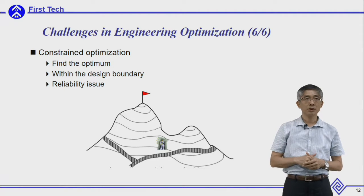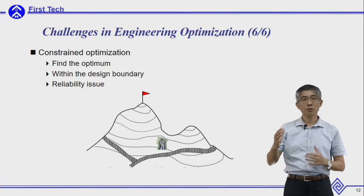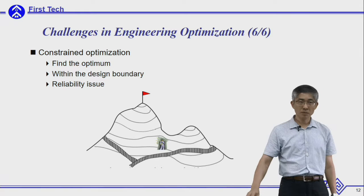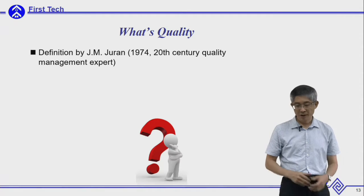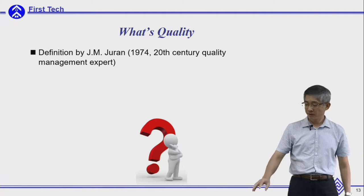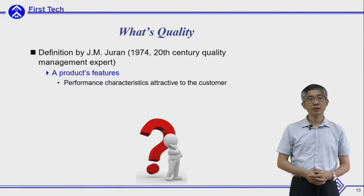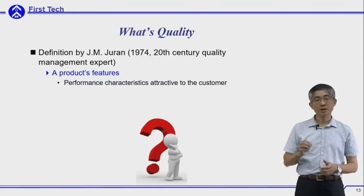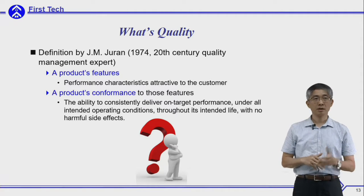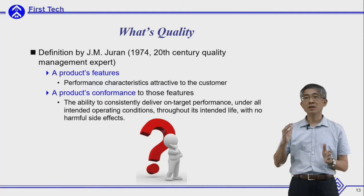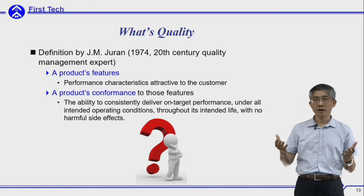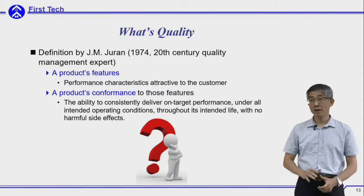When within the design boundary, you need to consider reliability, because every variable will have tolerances. You need to make sure that when tolerances occur, your design is still feasible. What is quality? An expert in 20th century quality management, Mr. Durand, gave a clear definition. The first part of quality is a product's features — characteristics attractive to the customer. The second is conformance: the ability to consistently deliver on-target performance regardless of operating conditions, throughout its intended life and without any harmful effects.